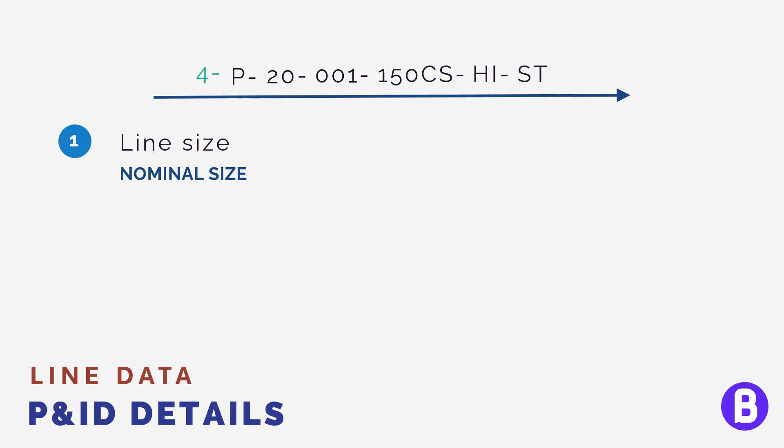Fluid code for the line that we are expected to handle. For example, a process fluid may take the code of P. A cooling water fluid may take the code of CW and so on. So let's say it's P for example.